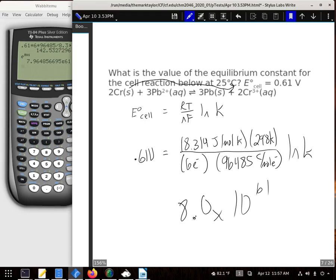Now your book actually does introduce a shortcut way of using, I think it's 0.0592 in place of the 8.314, the 298, and the 96,495. If you use that, you might not get exactly this. Using this full equation is a little bit better way to do it.